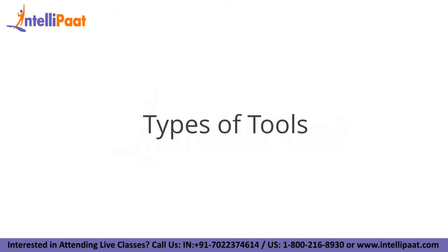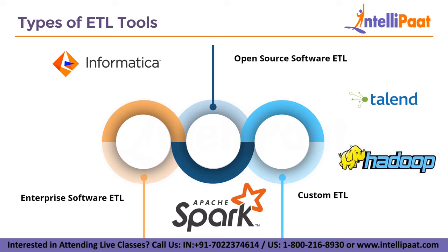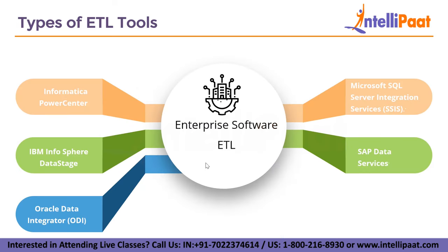Let's discuss the types of ETL tools available. ETL tools have been available for more than 30 years, and various types of solutions have advanced during that time. Enterprise Software ETL refers to commercial ETL software sold and supported by software vendors — the most mature in adoption and functionality. These tools offer graphical user interfaces for planning and running ETL pipelines and are linked to the majority of relational databases. Some also support non-relational data sources such as JSON and XML, and a few support streaming sources like Apache Kafka. Examples include Informatica PowerCenter, IBM InfoSphere Data Stage, Oracle Data Integrator, Microsoft SQL Server Integration Services, and SAP Data Services.